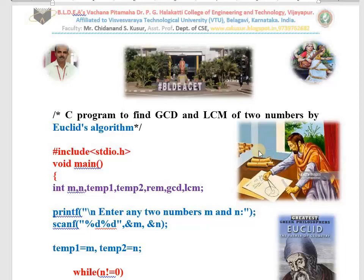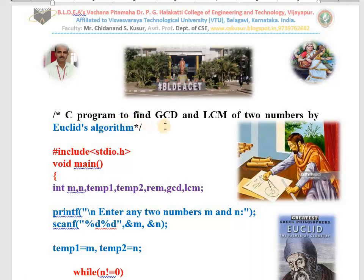Hello, dear students. In today's class I teach you one more important program from C language, that is a C program to find GCD and LCM of two numbers by using Euclid's algorithm. Before writing this program we need to understand the given question. The question is: you need to develop a software or program to find greatest common divisor and lowest common multiplier of two numbers.